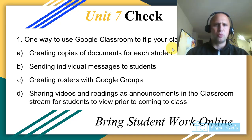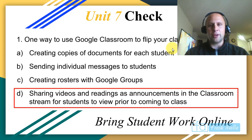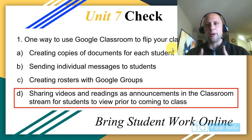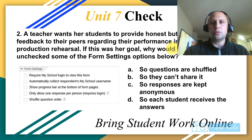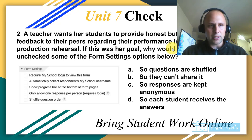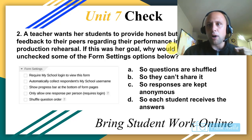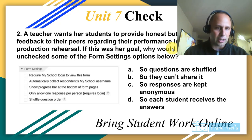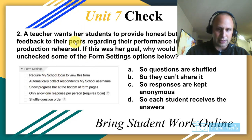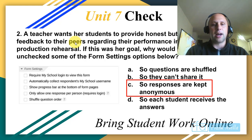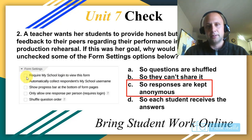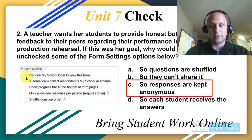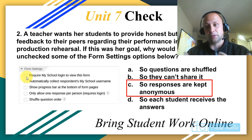Unit 7 final check. One way to use Google Classroom to flip your classroom is by sharing videos and readings — remember a flipped classroom isn't just videos, it's getting content out as homework. A teacher wants students to provide honest but constructive anonymous feedback on a theater production. She unchecked certain form settings — requiring school login — so responses are kept anonymous and students don't have to give their email address, making them more honest.